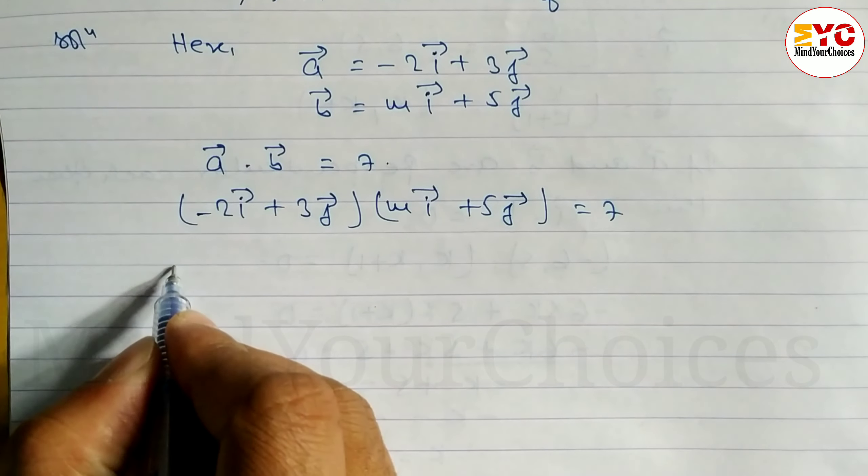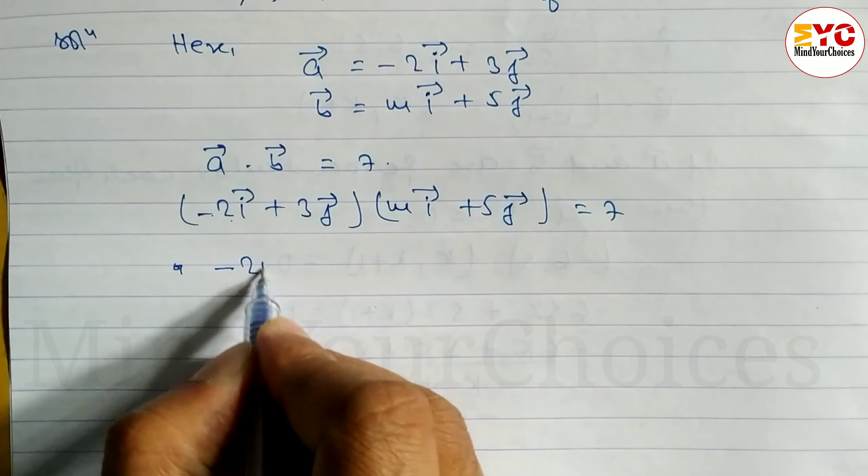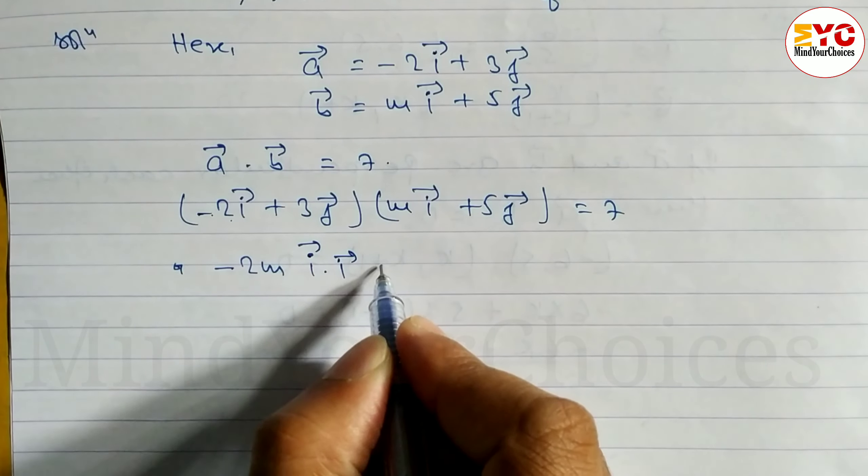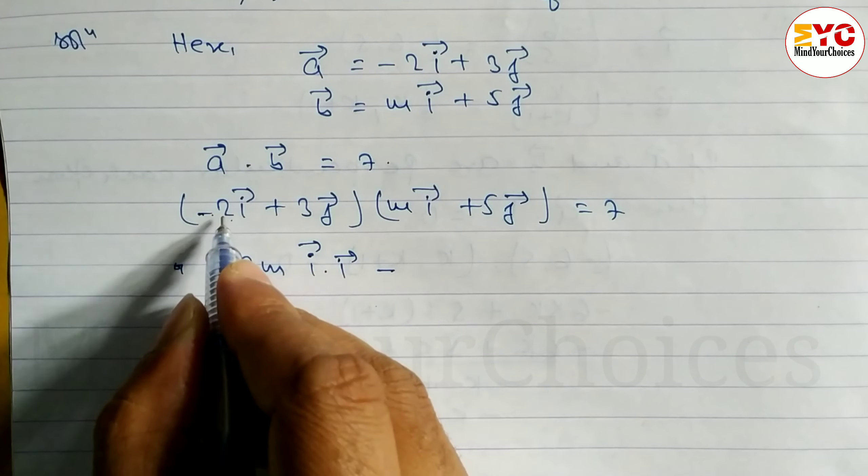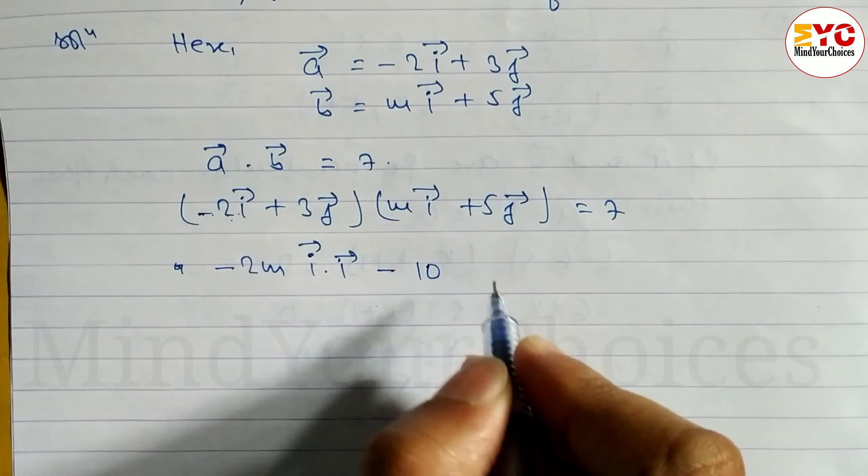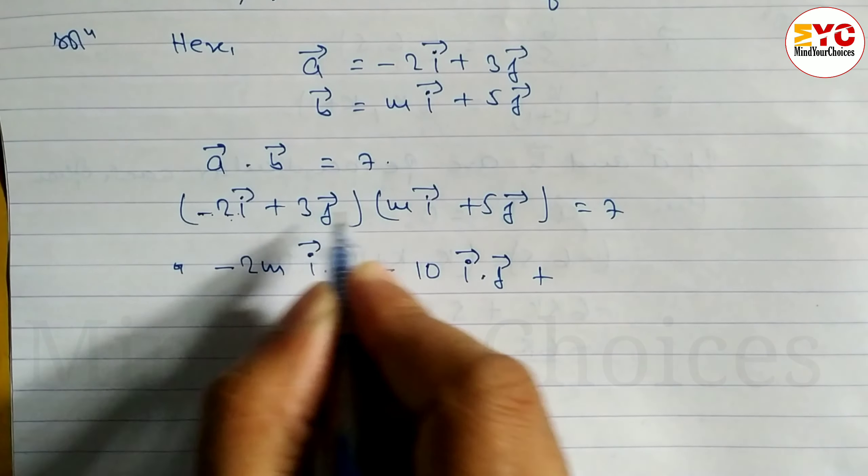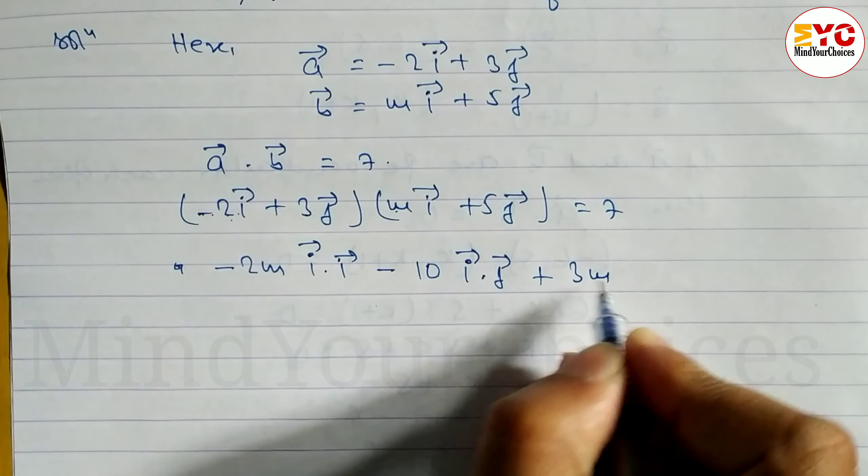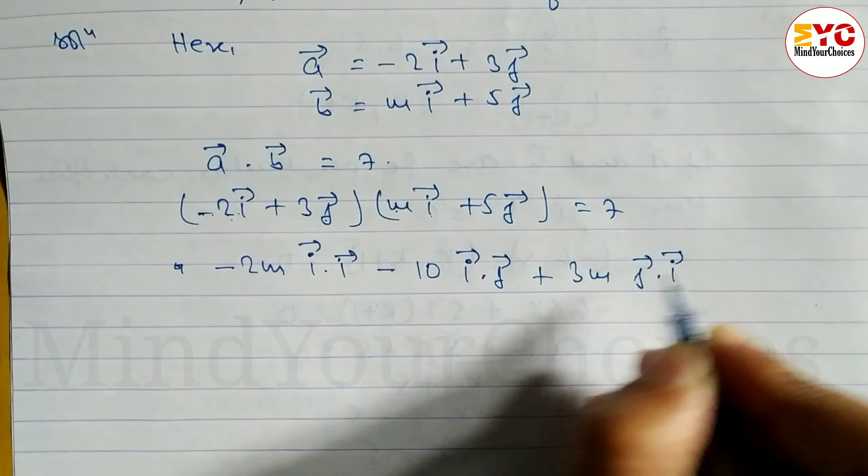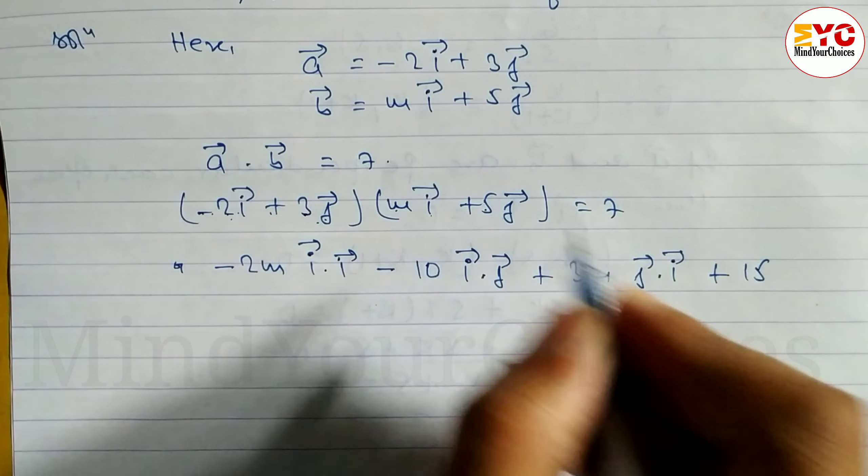Now let's multiply: (-2i⃗ + 3j⃗)·(mi⃗ + 5j⃗). This gives us -2m(i⃗·i⃗) - 10(i⃗·j⃗) + 3m(j⃗·i⃗) + 15(j⃗·j⃗) = 7.